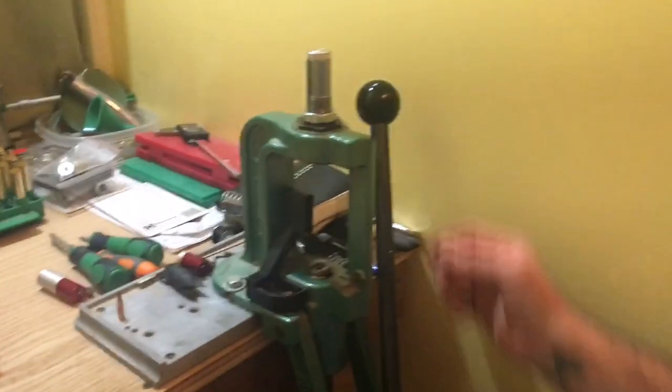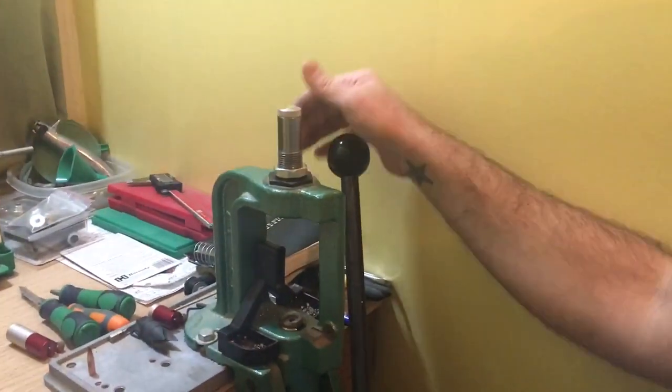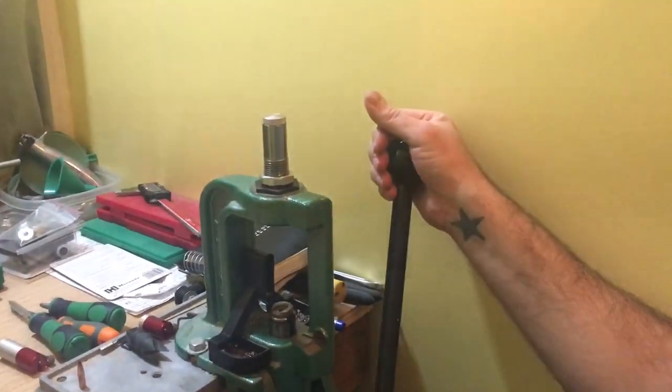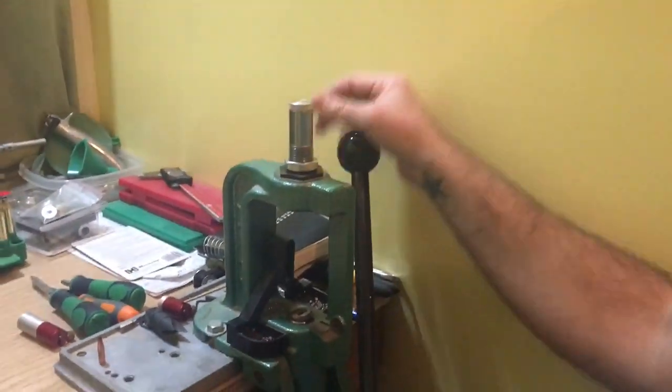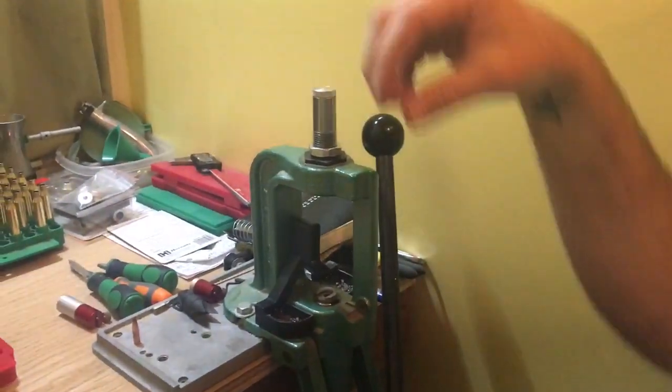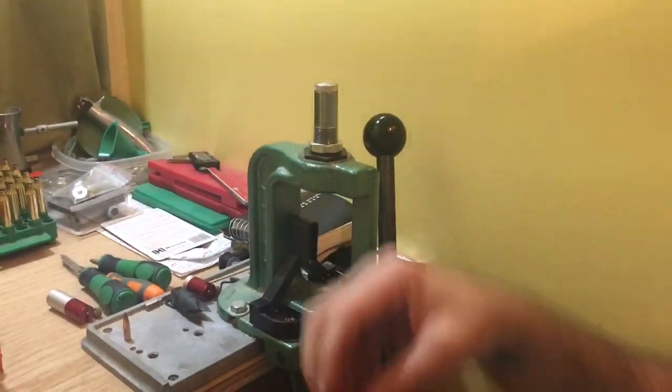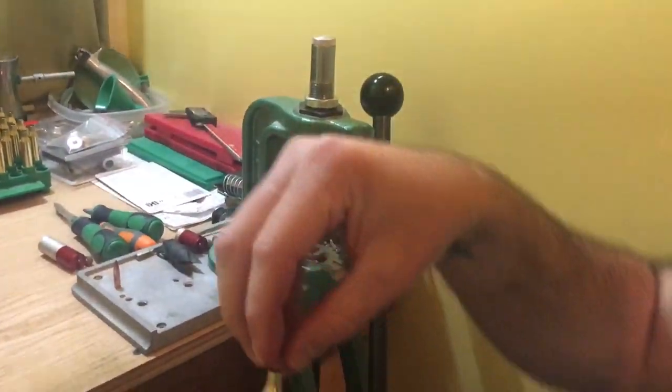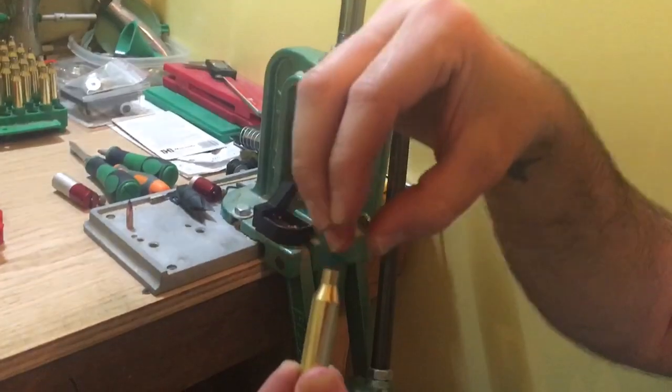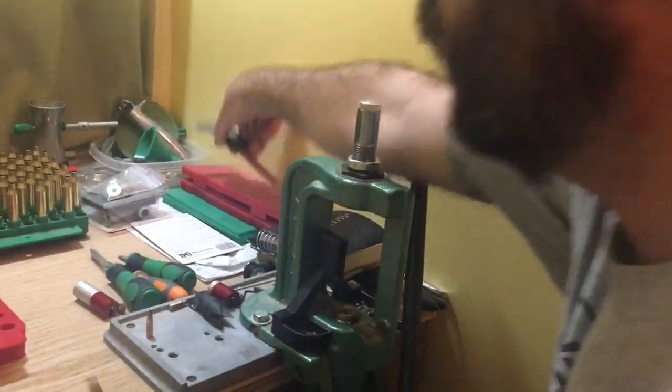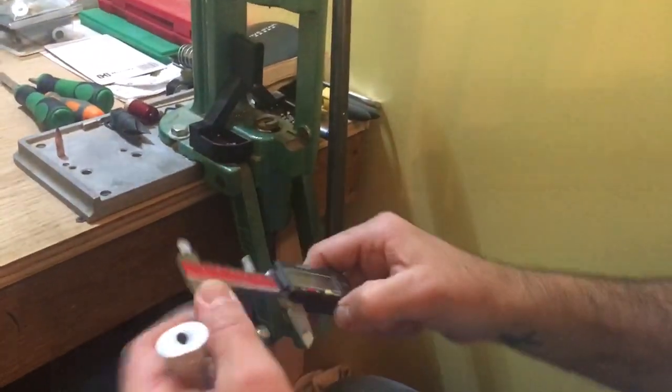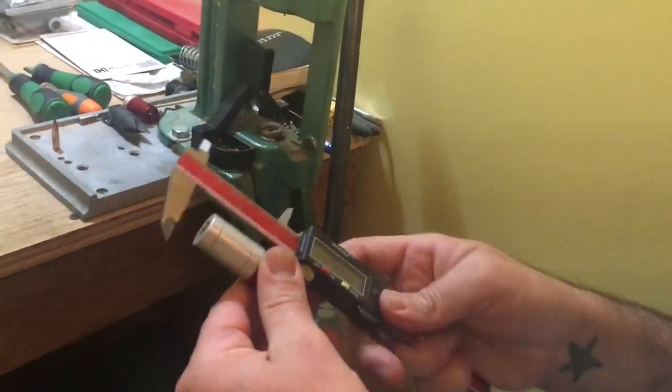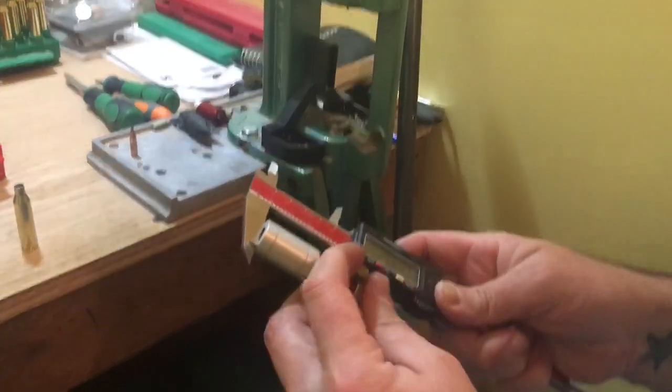So here's what we're going to do. And again, once you get this die set up, do not raise this ram up and press this collet together without a case in it because it will close the collet and then when you go to size a case it will pretty much squish right here down on the shoulder. But I'm going to show you that we're not doing anything to the actual shoulder.